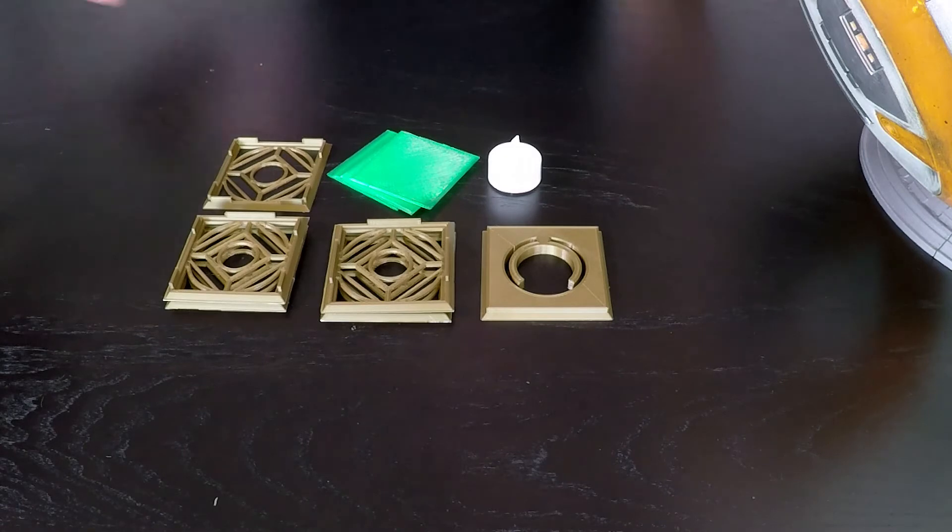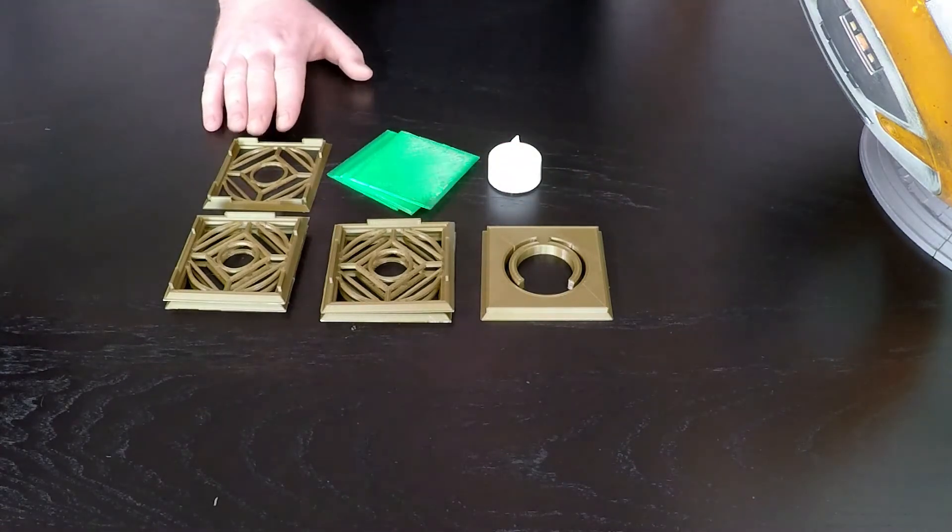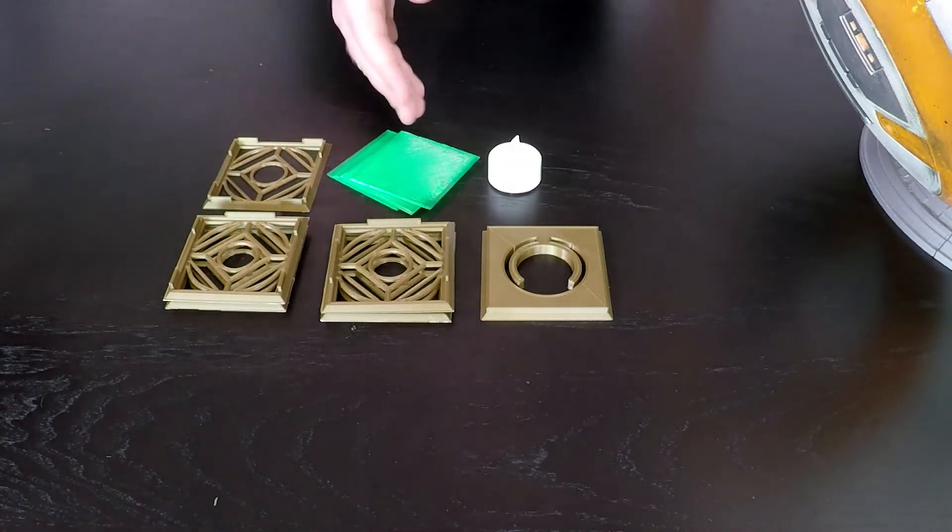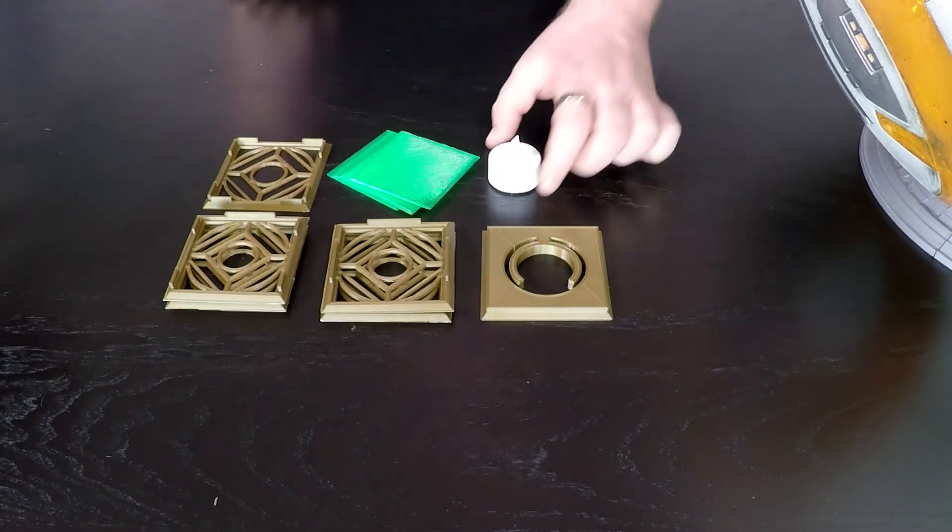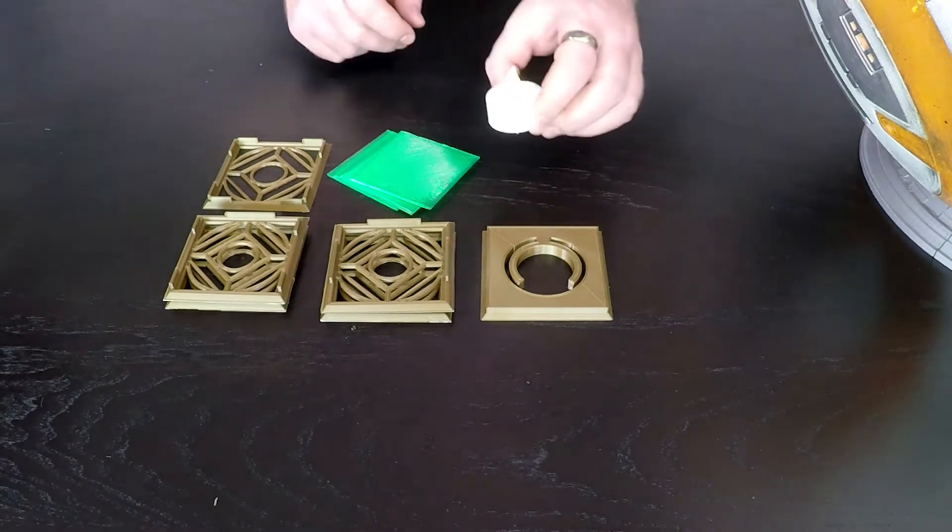Now that we have all our parts printed out, we've got the base, we've got the top, we've got two types of side panels, we've got the inserts, and then the non-printed part, our little tea light. It's time for final assembly. So first things first, let's turn on our tea light.